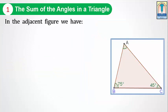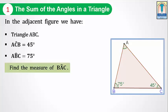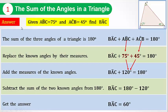In the adjacent figure we have triangle ABC. ACB equals 45 degrees, ABC equals 75 degrees. We want to find the measure of angle BAC. The sum of angles in a triangle is 180 degrees, so we can write: BAC plus ABC plus ACB equals 180 degrees. Now replace the known angles by their measures. BAC is the angle we are finding. ABC equals 75 degrees, ACB equals 45 degrees.